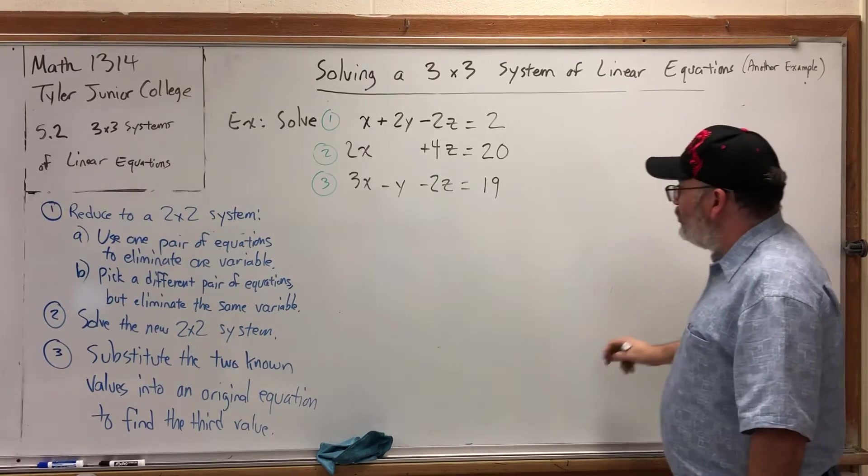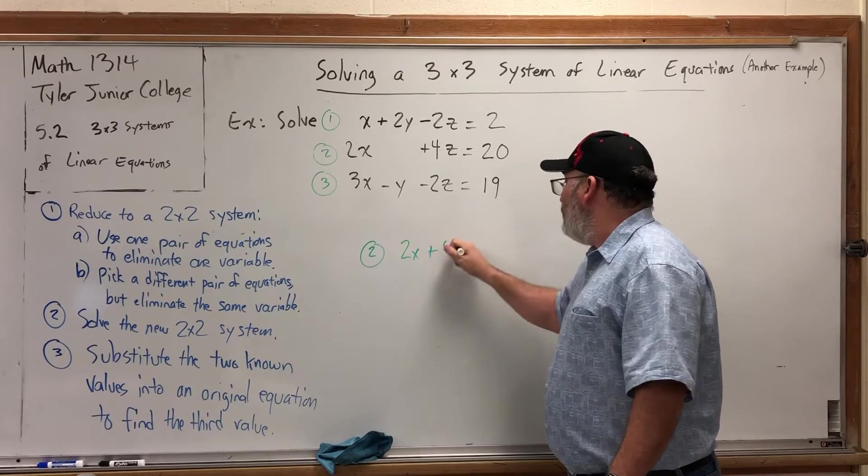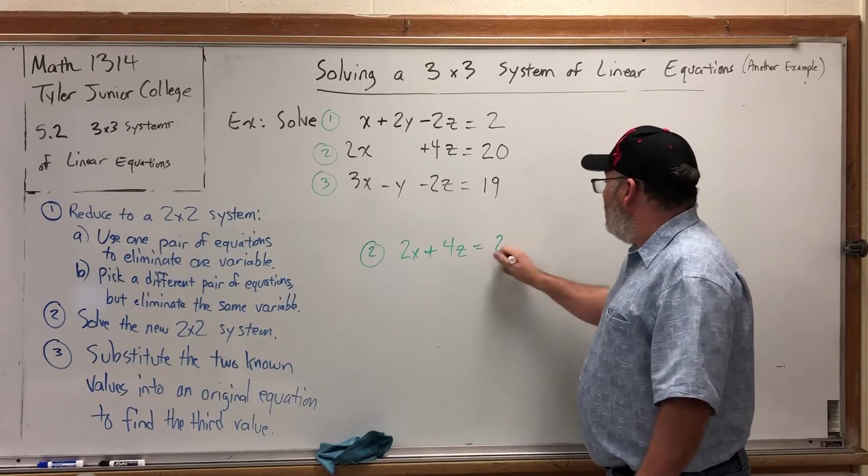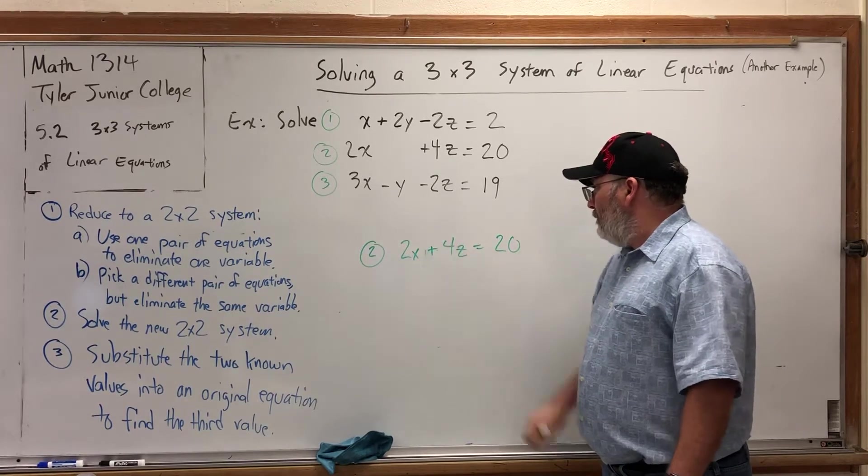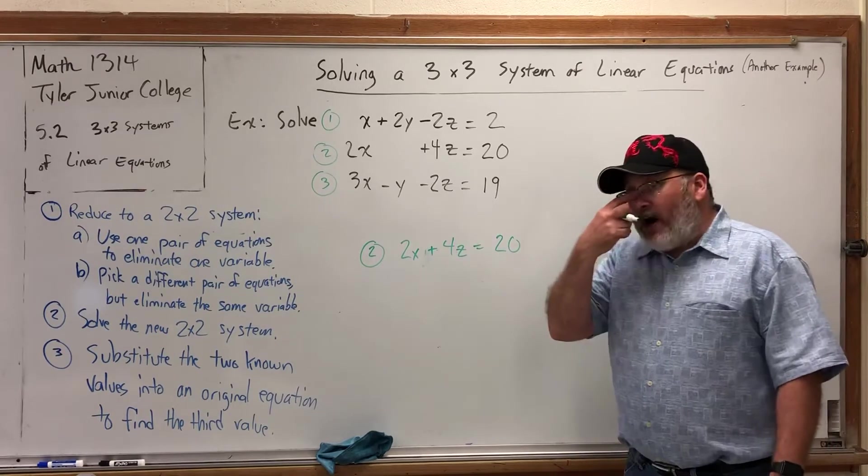If I take equation 2, which is 2x plus 4z, I'll close the gap where the y would be, equals 20. To make a 2x2 system, I need another equation with x's and z's.